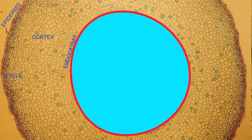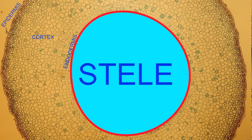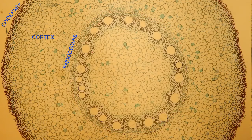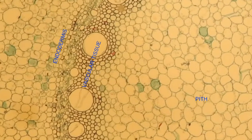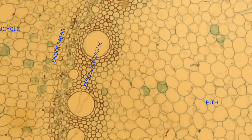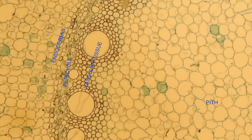Interior to the endodermis, collectively the regions are known as the stele. This includes a central pith, vascular tissue — the xylem and phloem — and the area just interior to the endodermis but adjacent to it, known as the pericycle. This area is the region from which lateral roots may be initiated.